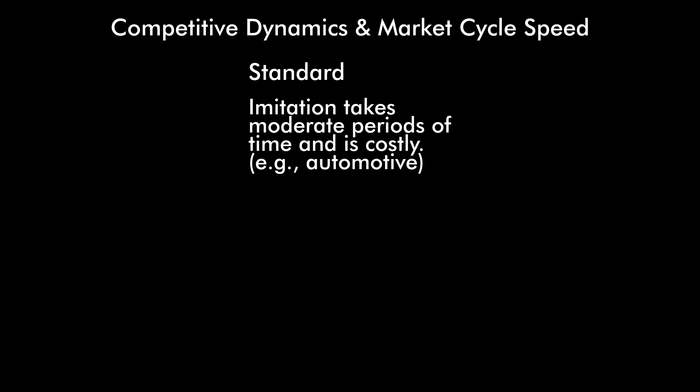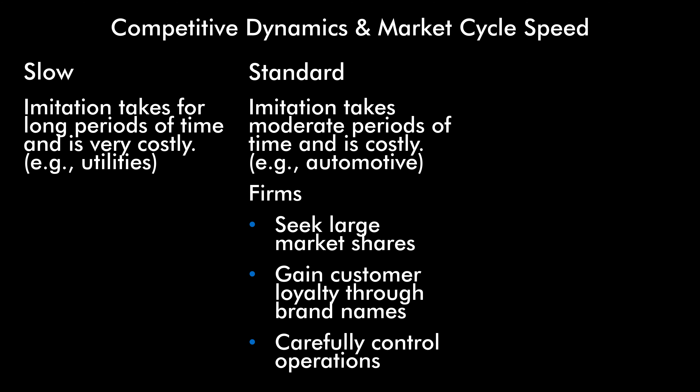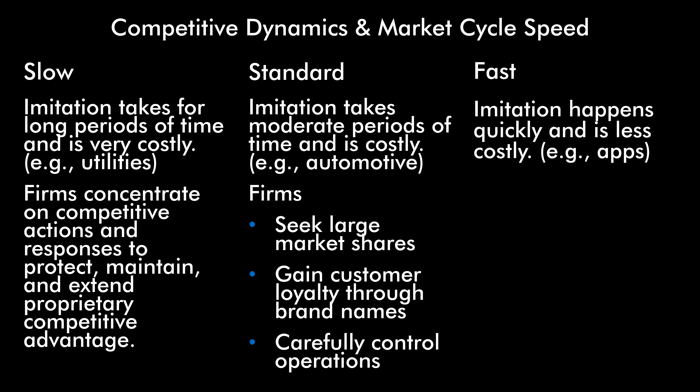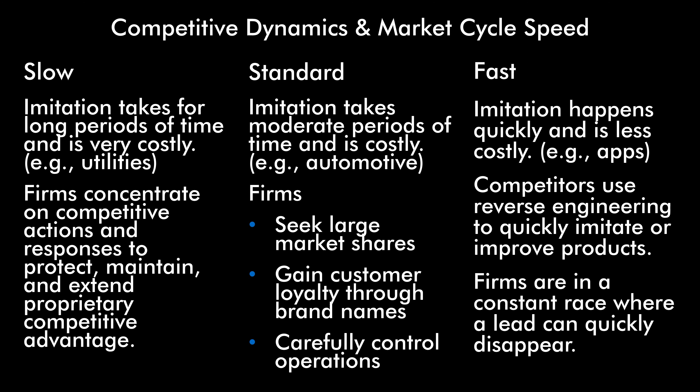Finally, let's talk about competitive dynamics and market cycle speed. In a standard cycle, imitation takes a moderate period of time and is costly — consider the automotive industry. Firms seek large market shares, gain customer loyalty through brand names, and carefully control operations. In a slow cycle, imitation takes long periods of time and is very costly — for instance, utilities — and firms concentrate on competitive actions and responses to protect, maintain, and extend their proprietary competitive advantage. In a fast cycle, imitation happens quickly and is less costly — think of apps. Competitors can use reverse engineering to quickly imitate or improve products, and firms are in a constant race where a lead can quickly disappear.